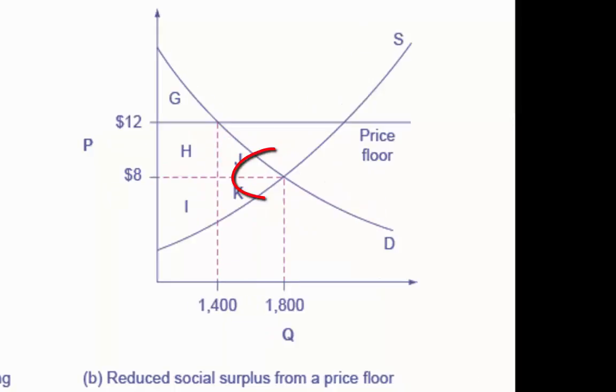The model on the right shows the original equilibrium at $8 and quantity of 1,800. Consumer surplus is G plus H plus J, and producer surplus is I plus K.